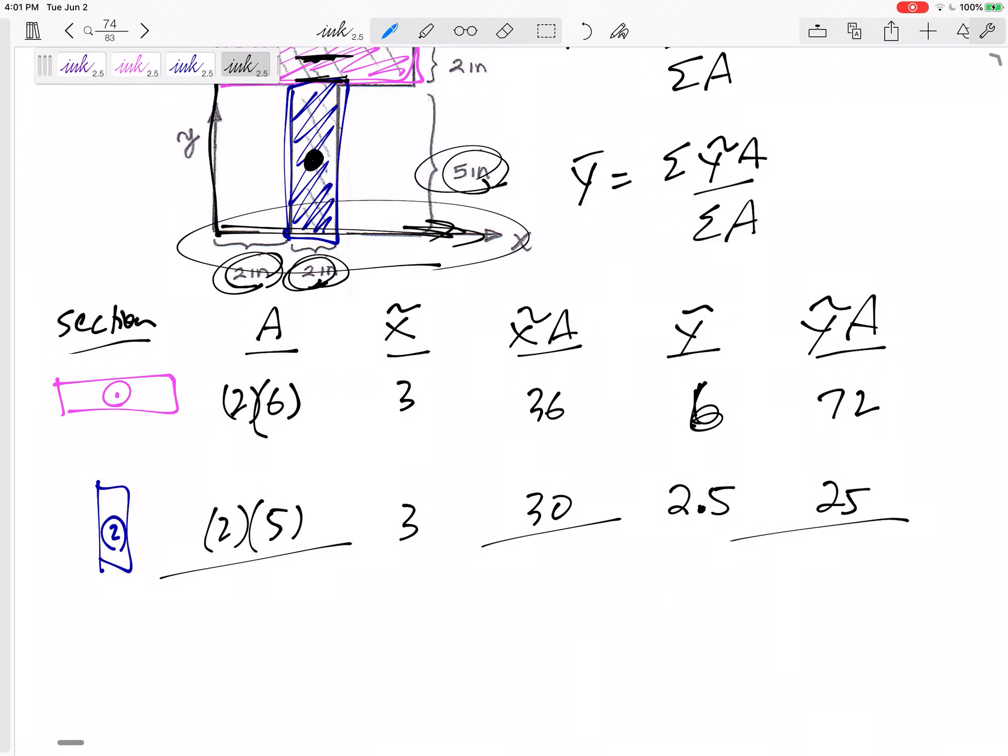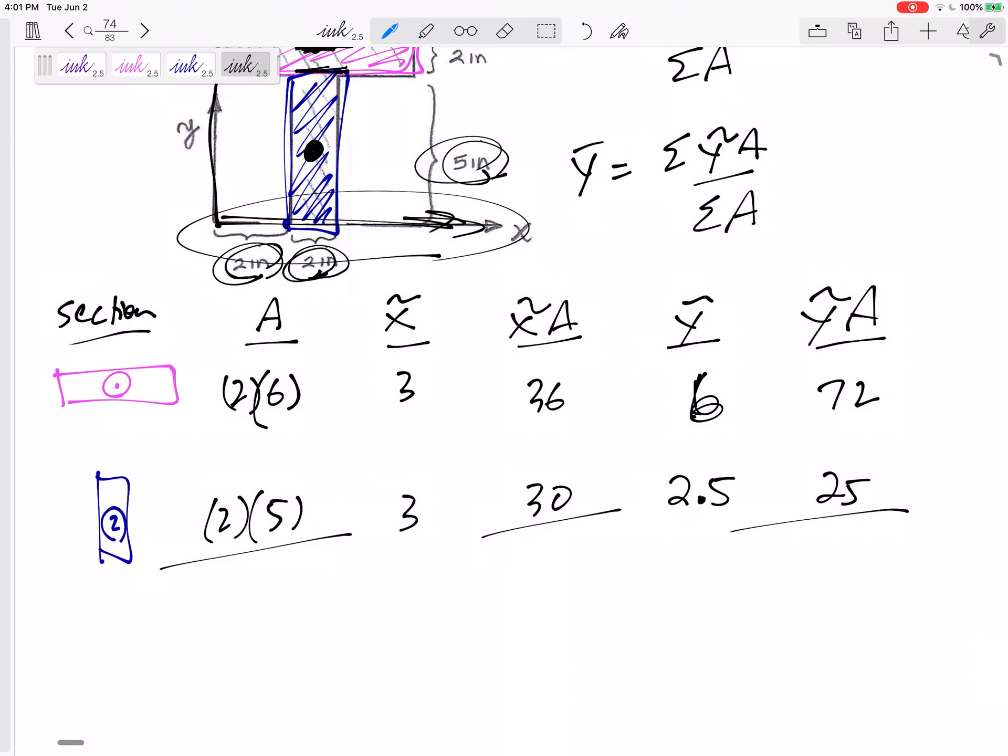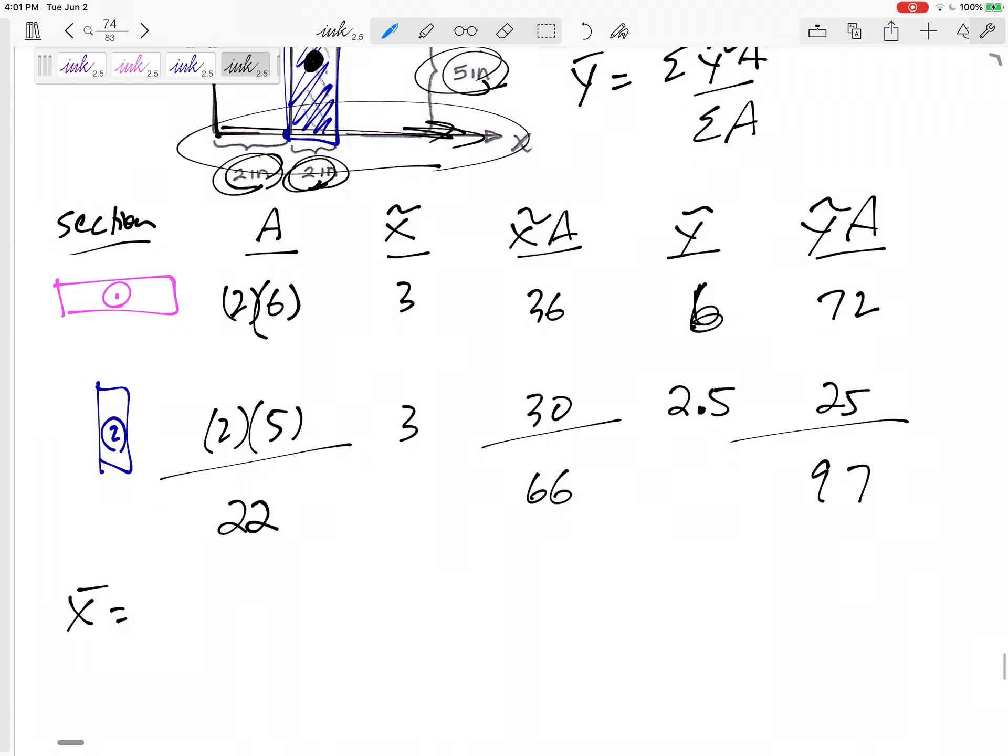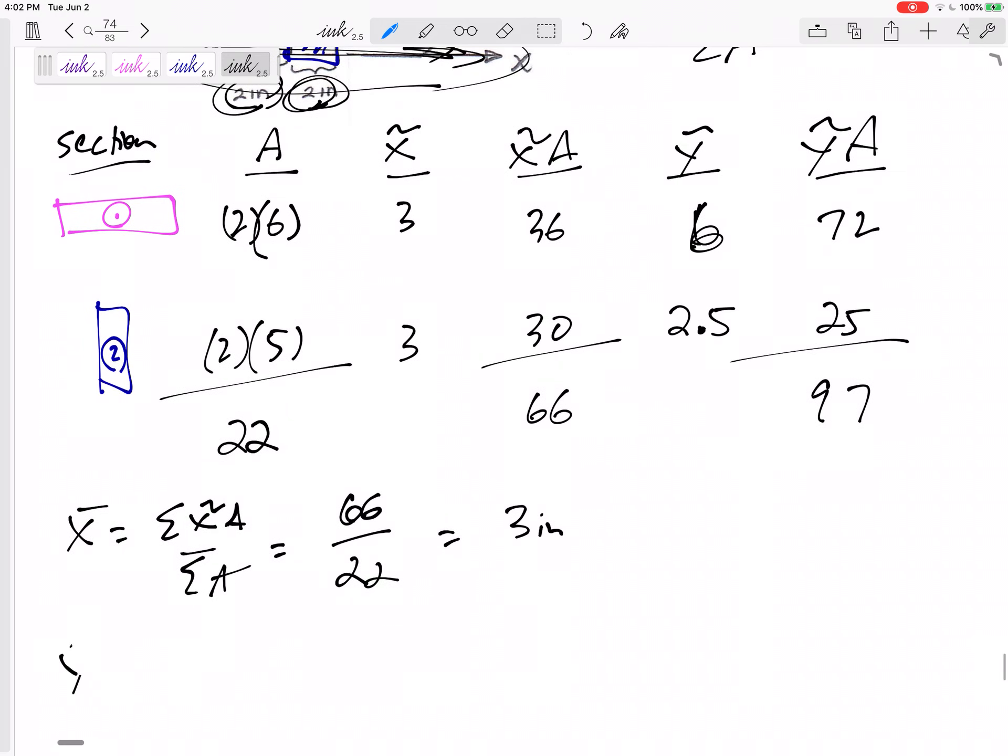And so these three columns are the ones that I'm adding up together. Both of their areas together, 12 plus 10 would be 22. This would be 66. This would be 97. So the X bar is X tilde a over summation of a. So 66 over 22, it'd be three. Y bar summation of Y tilde a over summation of a, 97 over 22, 4.41.